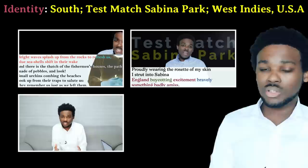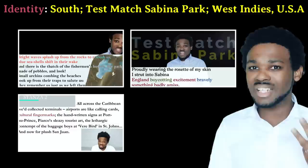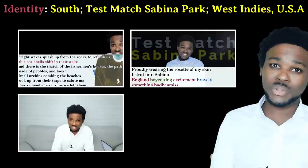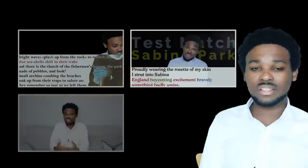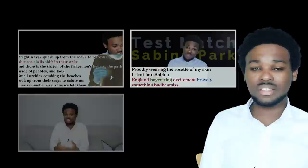In South, West Indies USA, and Test Match Sabina Park, we're dealing not with individual identities, but with cultural, national, and regional identities. These three poems take different angles as they explore who we are as West Indians. In all three poems, the West Indian identity is juxtaposed with other identities. In these poems, race and country are extremely important in the understanding of identity.